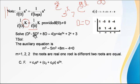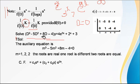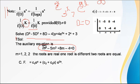Solve: (D³ − 5D² + 8D − 4)y = 4e^(2x) + 2^x + 3. Write the auxiliary equation by setting f(D) = 0: m³ − 5m² + 8m − 4 = 0. We find roots by checking values — putting m = 1: 1 − 5 + 8 − 4 = 0. So m = 1 is a root.